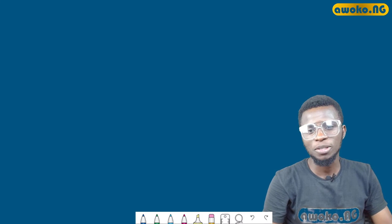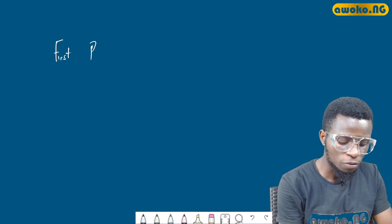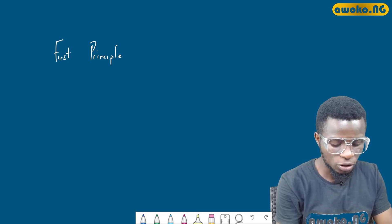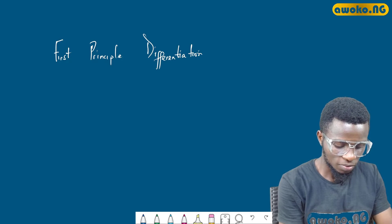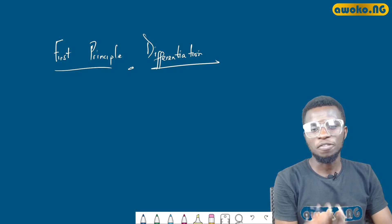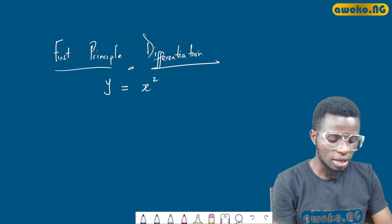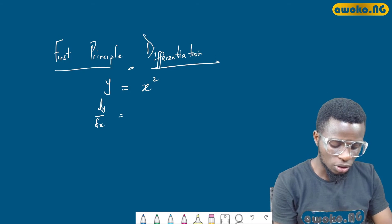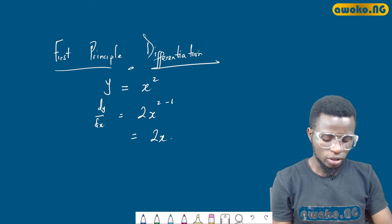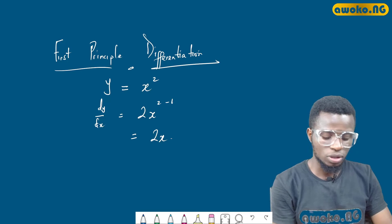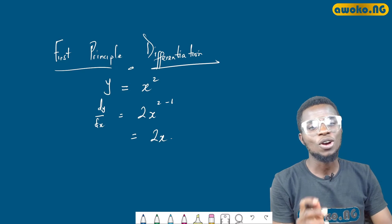Our focus for today's class is first principle differentiation — differentiation from first principles, they are still the same thing. Let us consider a function y equals x squared. From the formula method we know that dy/dx is going to give us 2x raised to the power 2 minus 1, which equals 2x. Now let us check if we still get the same answer using the first principle differentiation — they are supposed to give the same answer if computed correctly.